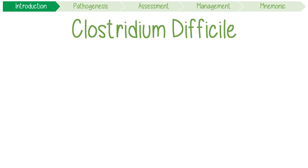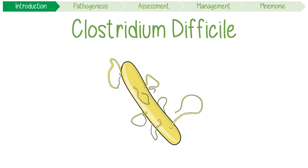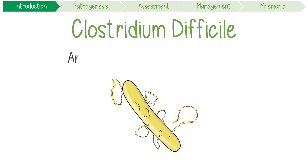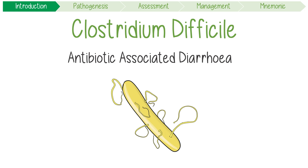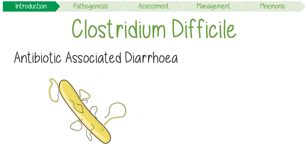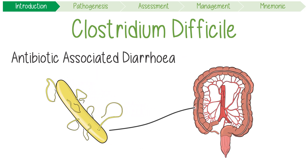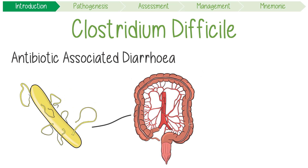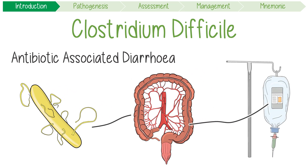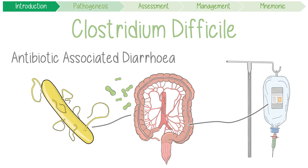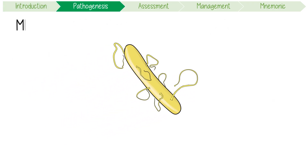Clostridium difficile, or C. diff, is a bacteria that causes severe antibiotic-associated diarrhoea. This is because it's great at colonising the gut after normal bowel flora is disrupted by broad-spectrum antibiotics. It can then produce inflammatory toxins in the large bowel, resulting in foul-smelling, watery stools.